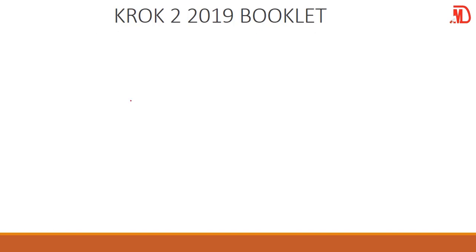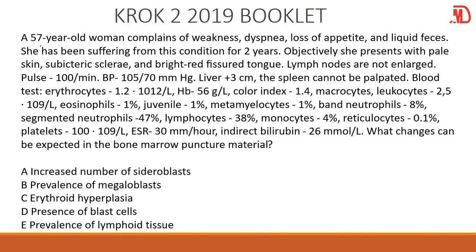So we have a 57-year-old woman with weakness, loss of appetite, and other symptoms. The patient is pale. When you see somebody who is pale, we do a general examination to check for the presence of anemia — when the person is pale that means there is anemia. Now the erythrocyte count is 1.2, which is low. The color index is 1.4, which is high, meaning something is not going right.